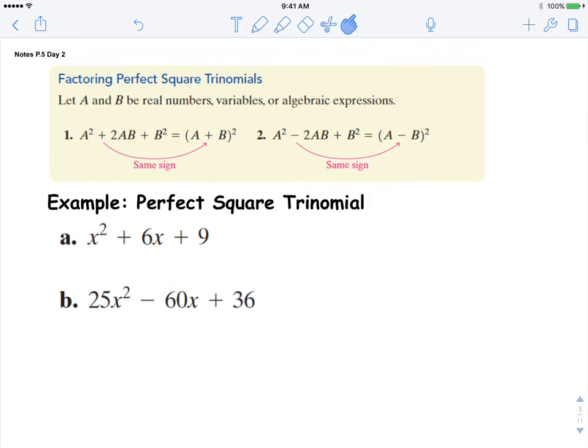The next two examples are working with perfect square trinomials. The rules are if you have two perfect squares on the outside of a trinomial, then the inside is produced by 2 times a times b. Let's look at this first example.